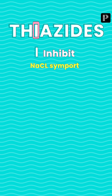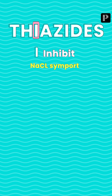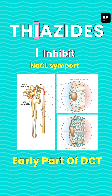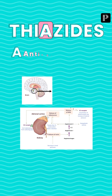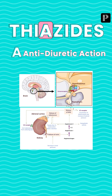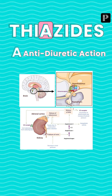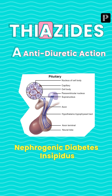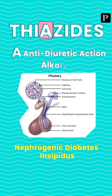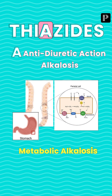The next letter is I — I stands for inhibit. They inhibit the sodium-chloride cotransporter in the early part of the DCT, which is their site of action. The next letter is A — A stands for anti-diuretic action, which is a paradox. Usually thiazides are diuretics, but they act as anti-diuretics in the management of diabetes insipidus, and they are the drug of choice for nephrogenic diabetes insipidus. A also stands for alkalosis — specifically metabolic alkalosis.